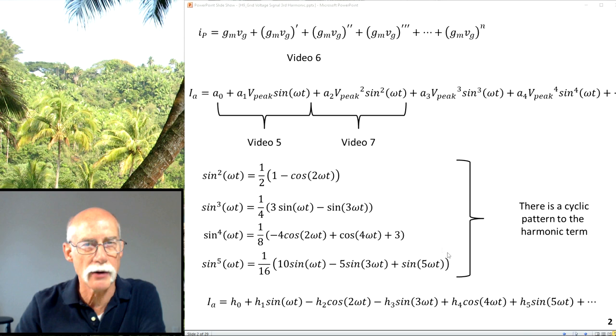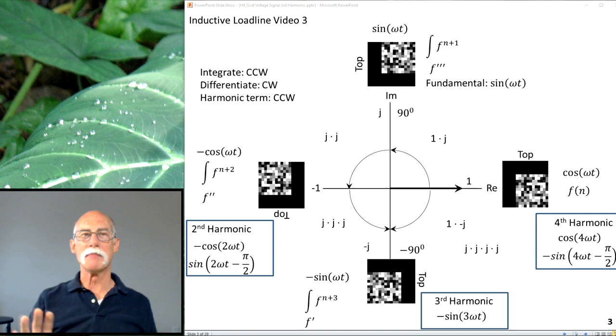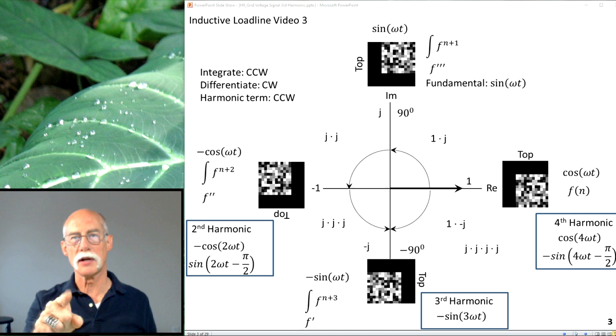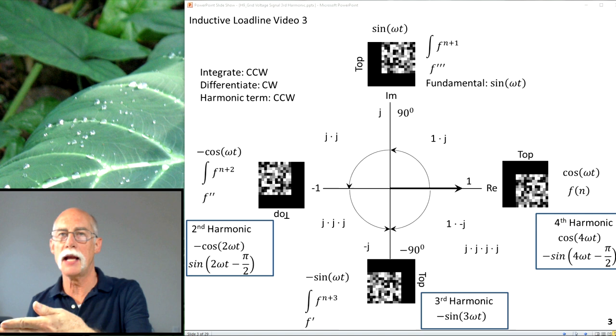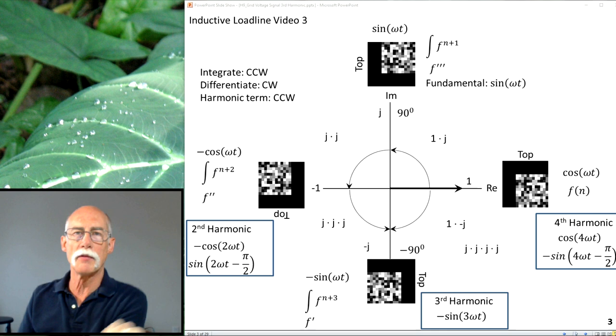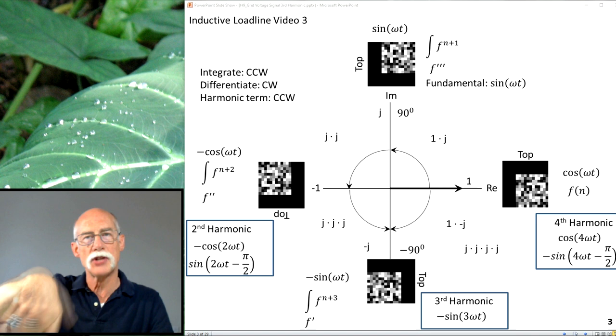Back on the inductive load line, I talked about this and I introduced it in the inductive load line video 3. When you take a picture and you multiply it by j, the imaginary number, what you're actually doing is shifting the angle of the picture. It just keeps going over and over. One simple operation. Multiply everything by that j factor, the imaginary number, you're actually changing it 90 degrees.